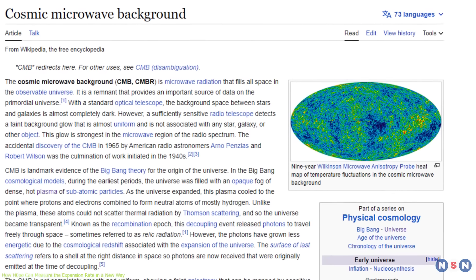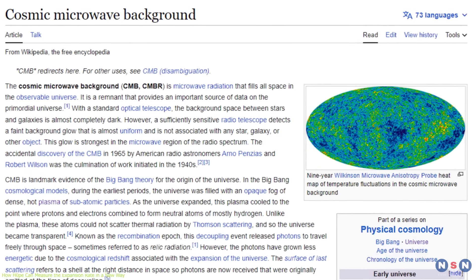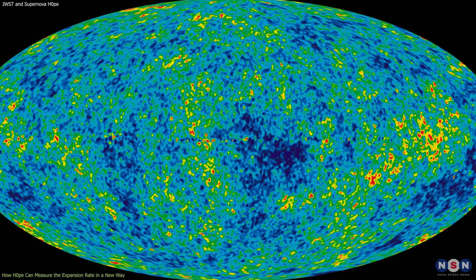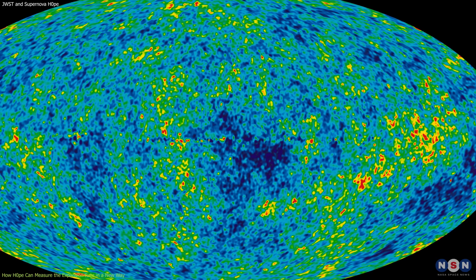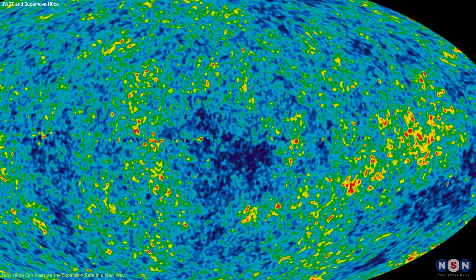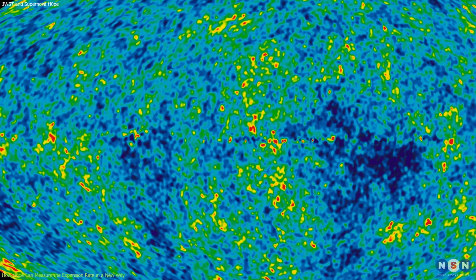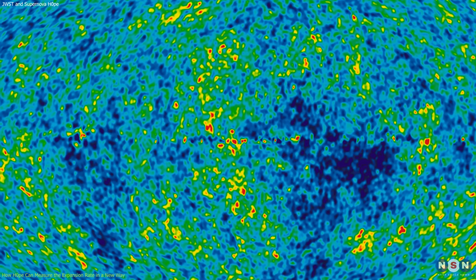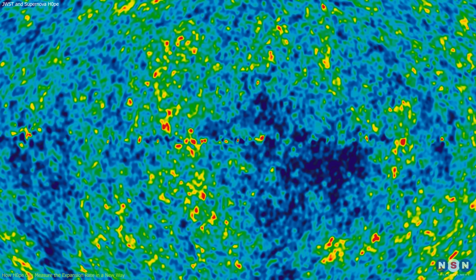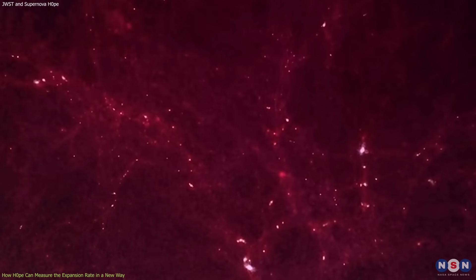One way to measure H0 is to use the Cosmic Microwave Background, CMB, which is the oldest light in the universe that was emitted about 380,000 years after the Big Bang. The CMB contains tiny fluctuations in temperature and density that reflect the initial conditions of the universe.